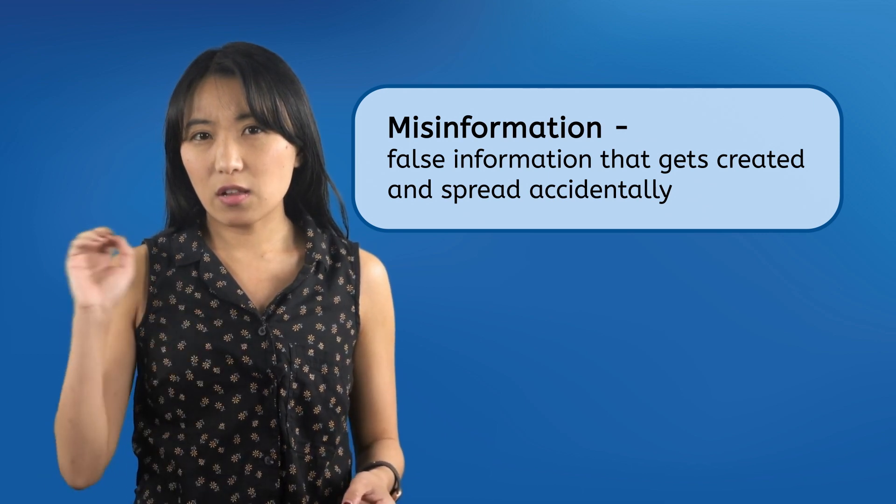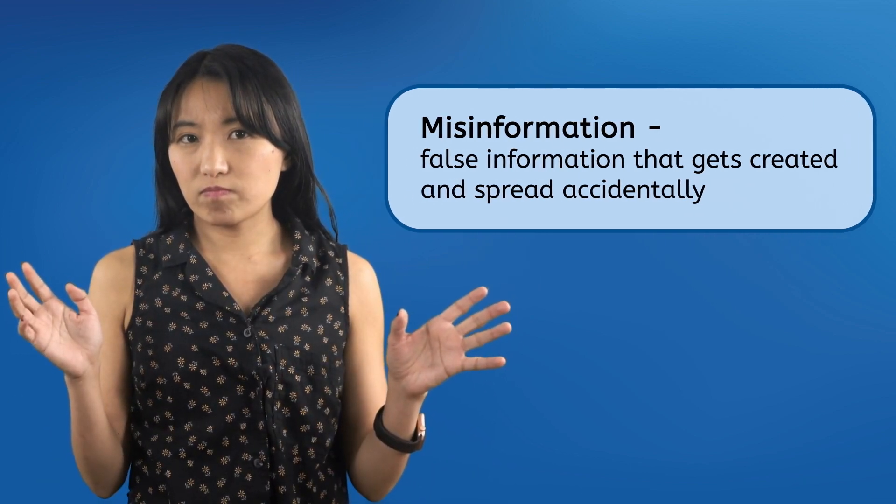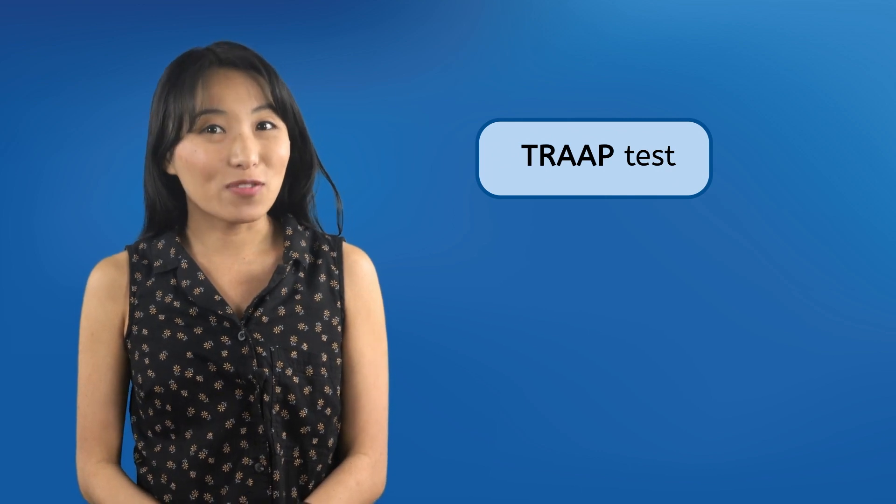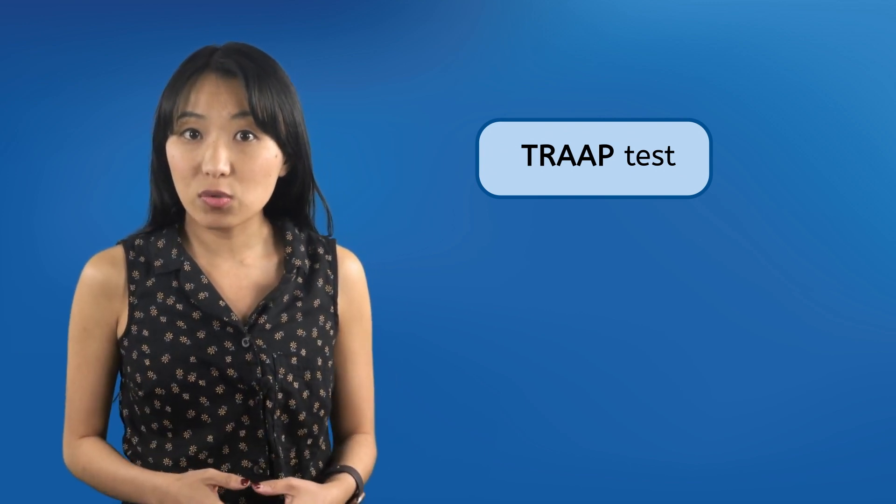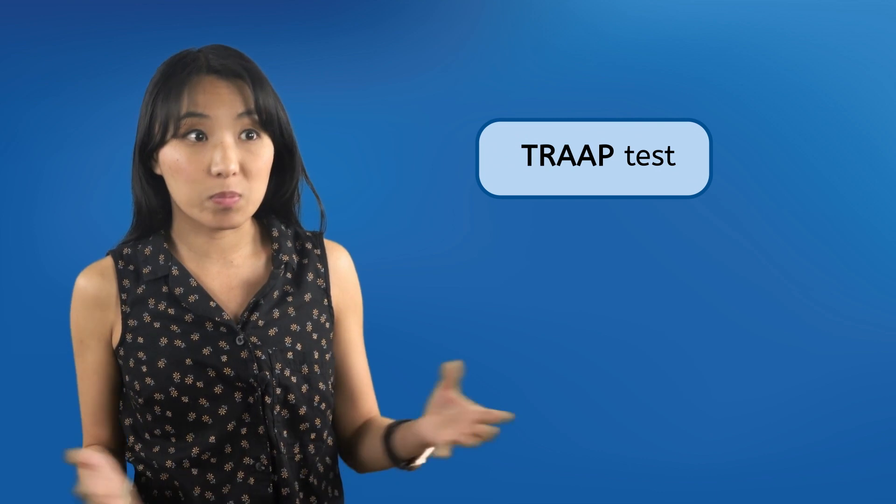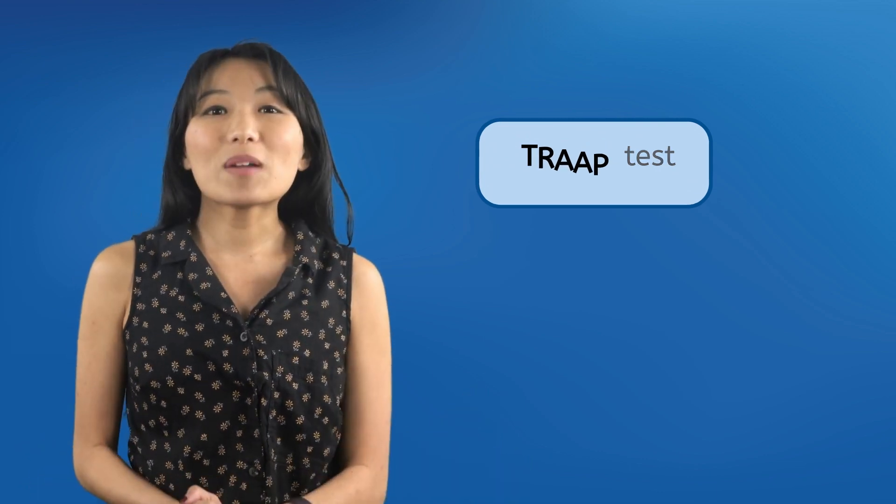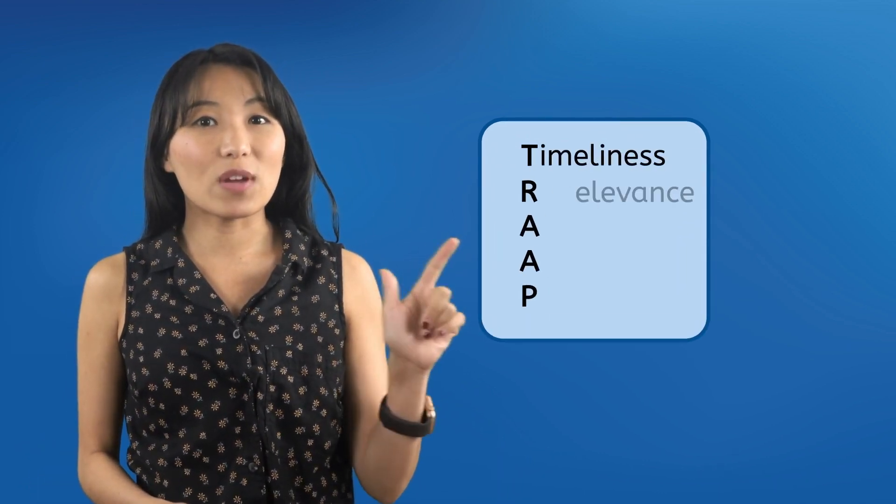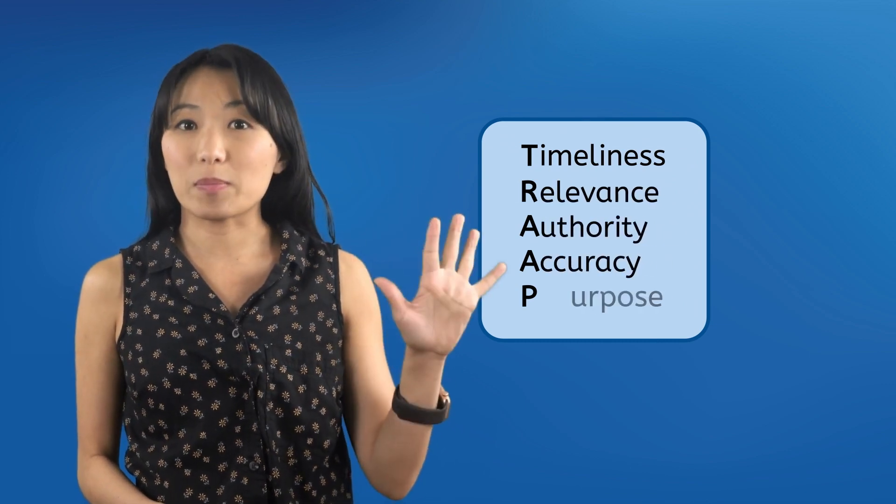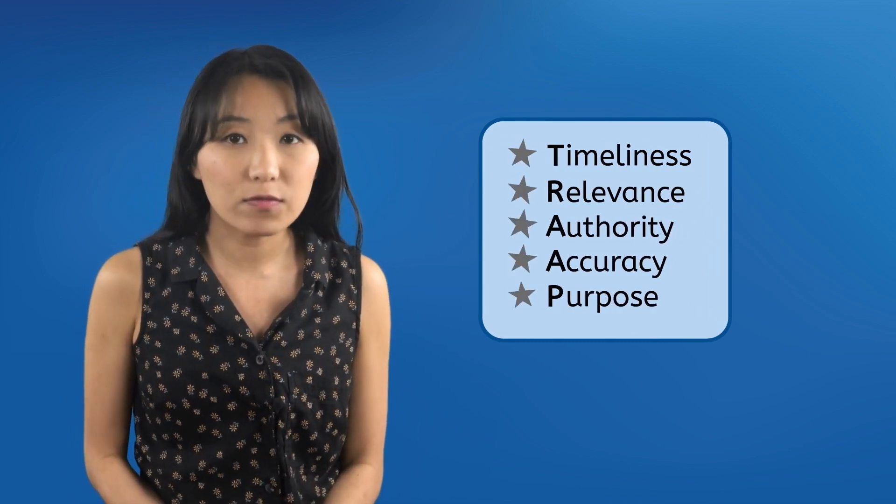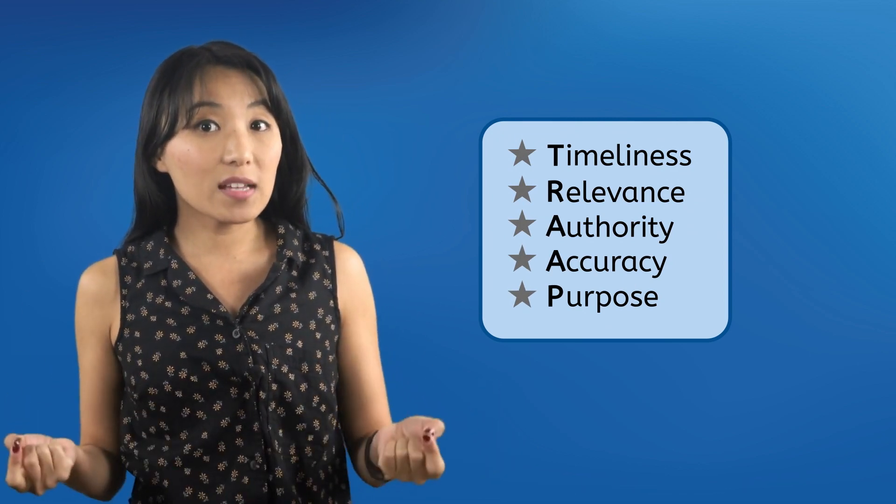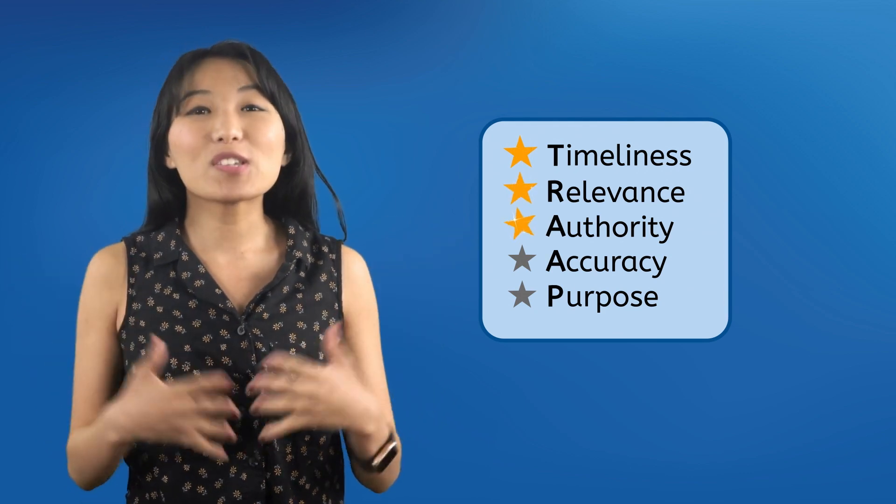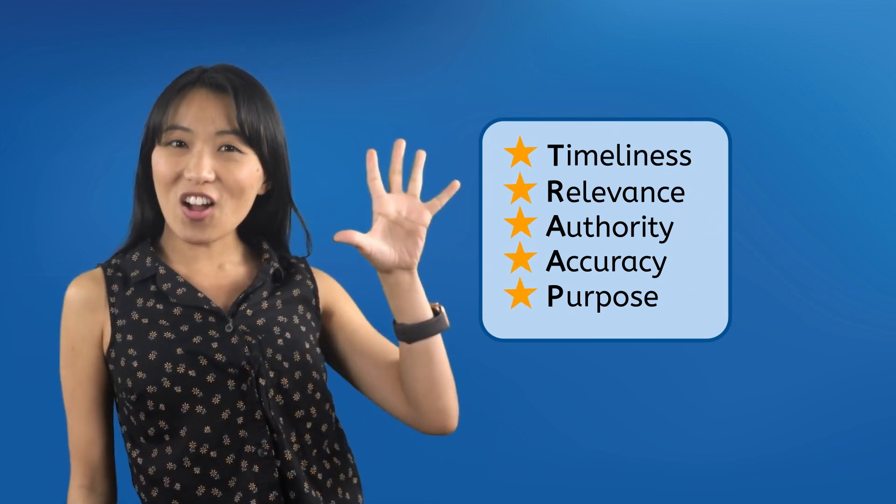So how can you tell fact from fiction? You can test if it's a trap, of course. The TRAP test is a way to evaluate whether information is credible or if you're in danger of falling into a misinformation trap by believing it or, worse, spreading it to others. The TRAP test consists of five factors: timeliness, relevance, authority, accuracy, and purpose. Think of it kind of like rating the information source on a scale from zero to five. The more of these factors a source has, the higher its rating is, with the most credible information scoring a perfect five stars.